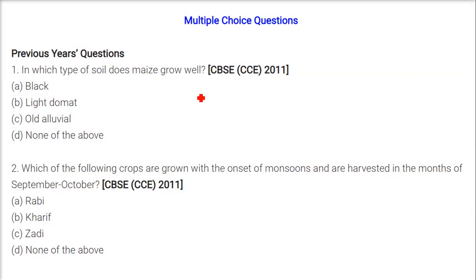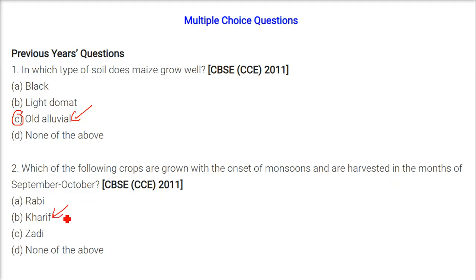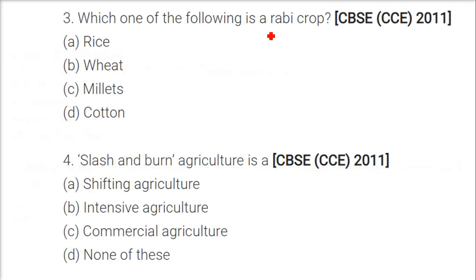Multiple choice questions: In which type of soil does maize grow well? — Old alluvial soil. Which crops are grown with the onset of monsoons and harvested in September-October? — Kharif crops. Which one is a rabi crop? — Wheat. Slash and burn agriculture is called shifting agriculture — you clear and grow on land, burn it, leave it with the ash so it regains its fertility.